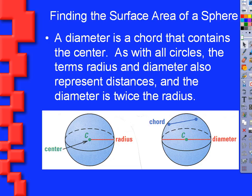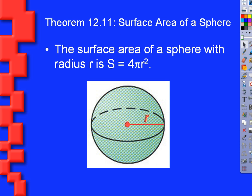A chord is any segment that connects endpoints on the surface of the sphere. The diameter is just a chord that contains the center. The surface area of a sphere is 4 pi r squared — similar to the area of a circle being pi r squared, but four times as much because the sphere is rounded and has more surface.